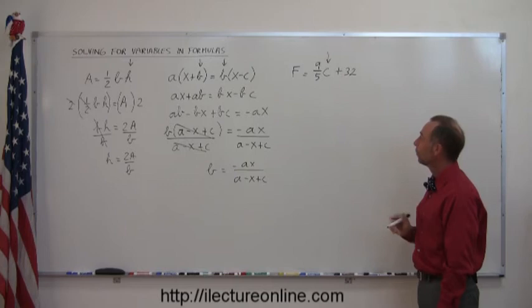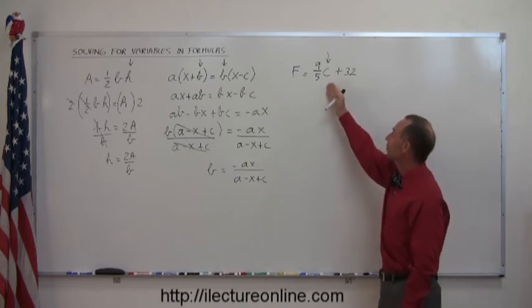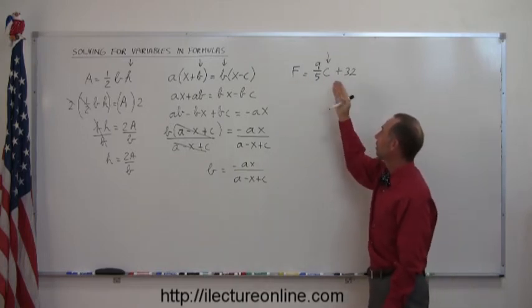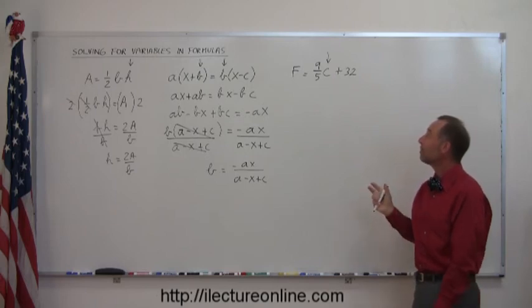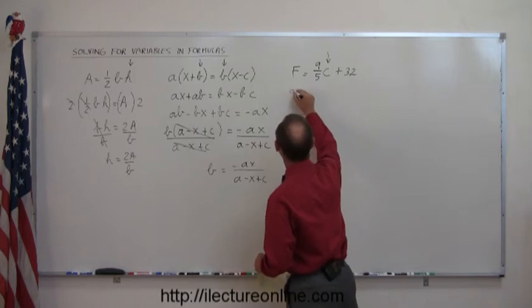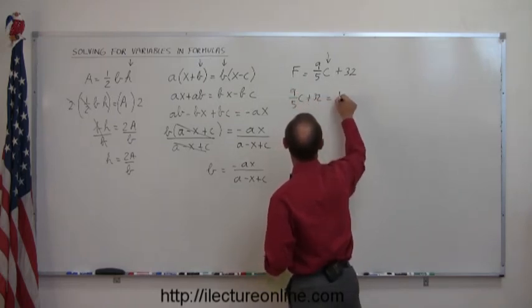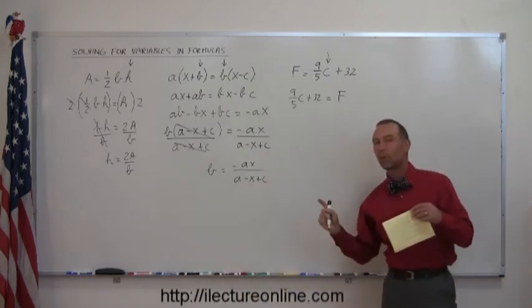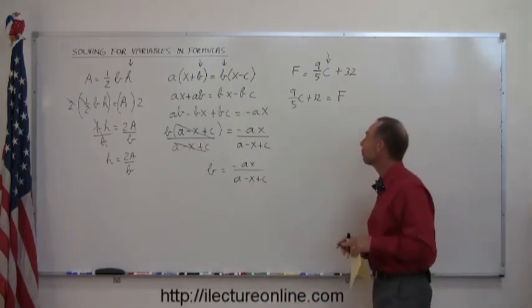Now let's look at this one. We want to solve for C, that means this term has to make it to the left, this term has to make it to the right. Although it might be not a bad idea to simply flip the equation around, so we can write this as 9 over 5C plus 32 equals F. Again, if you flip the whole equation around, you do not have to change any signs.